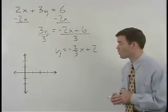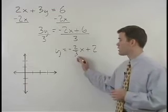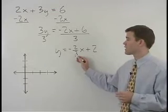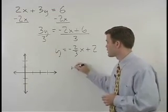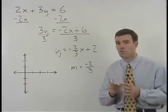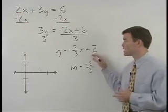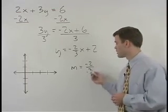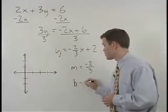Its slope or m, remember, is the coefficient of the x term, which in this case is negative 2 thirds. Its y intercept or b is the constant term, which in this case is 2.